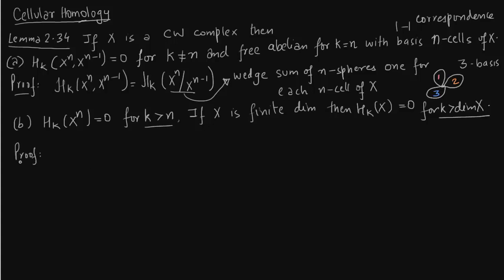I want to show H_k(X^n) is 0 for k greater than n. K greater than dimension of X is same as k greater than n. So first write the long exact sequence of the pair (X^n, X^(n-1)). We are going to use part A.